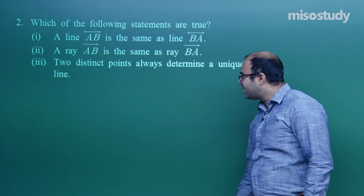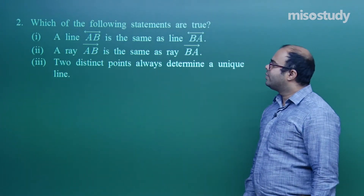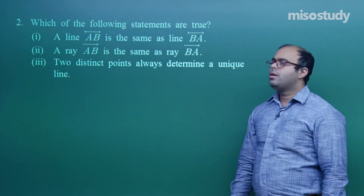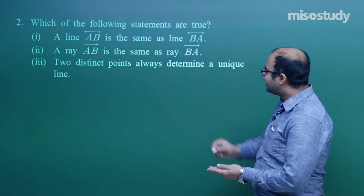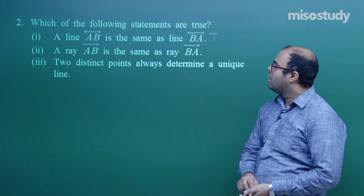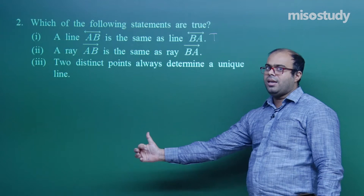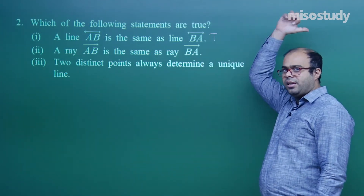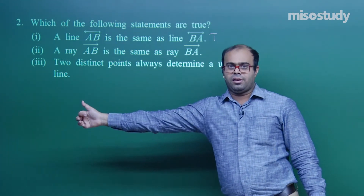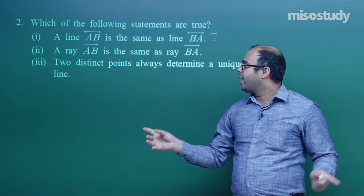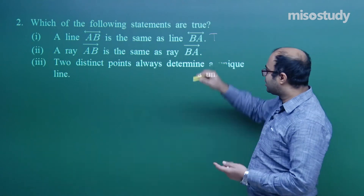The second question asks: is line AB the same as line BA? Yes, line AB is the same as line BA because both extend in both directions, so this is true. Is ray AB the same as ray BA? No — ray AB starts from A and extends indefinitely toward B, while ray BA starts from B and extends indefinitely toward A. They have two different directions, so this is false.